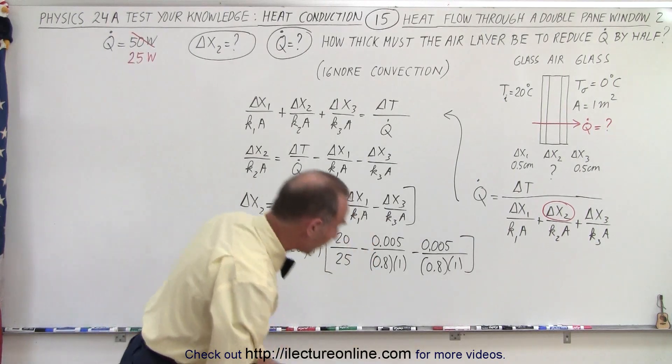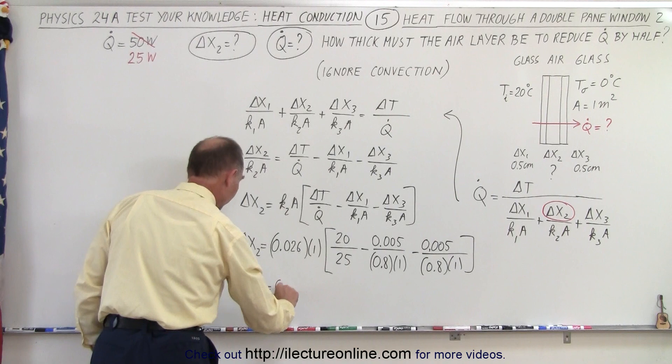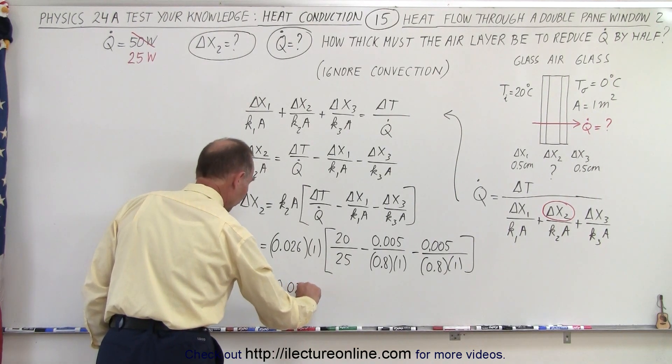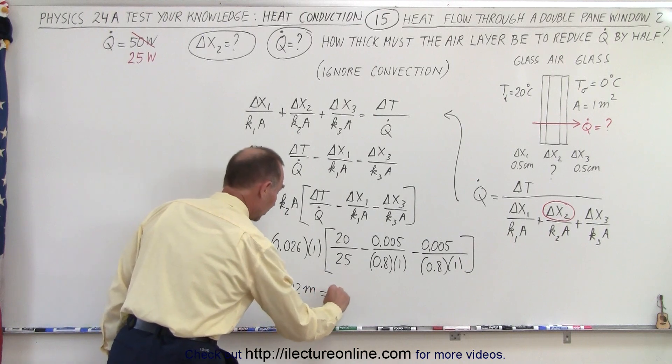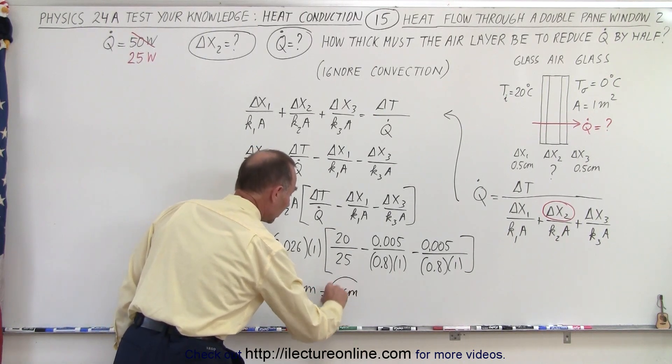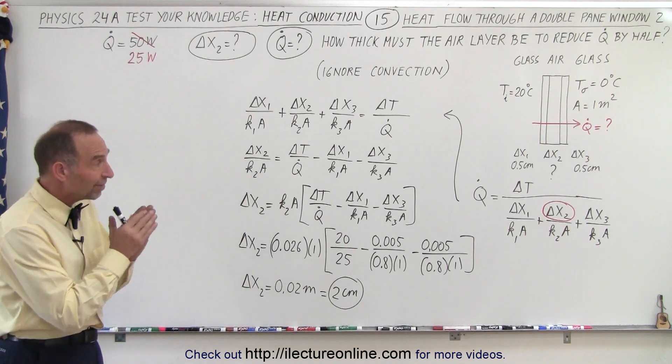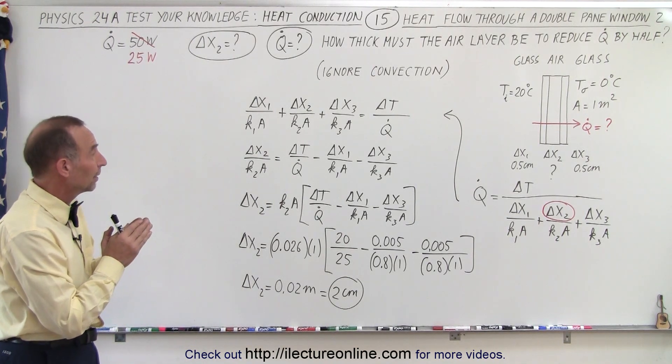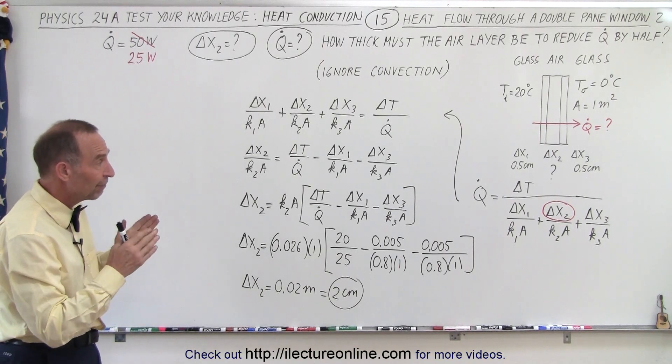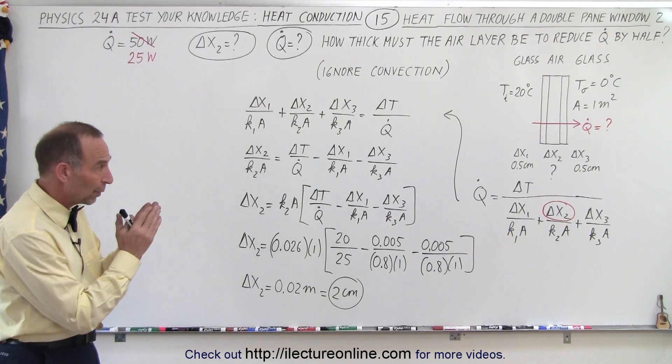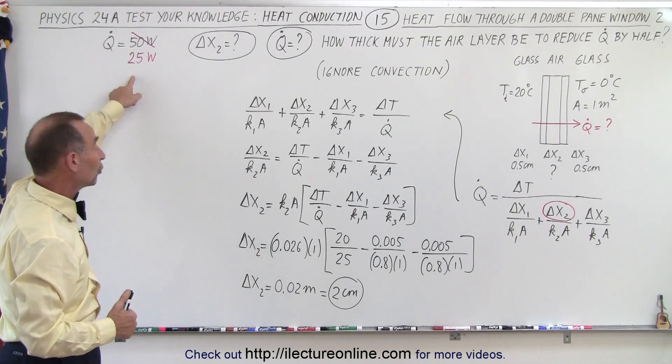Ah, that means 0.02 so delta x2 is equal to 0.02 and of course we're using standard units so that's meters converted to centimeters would be two centimeters which means that when the layer was one centimeter in between the heat conductivity gave us a heat flow of 50 watts and then when we doubled the width from one centimeter to two centimeters the heat flow went down to 25 watts.